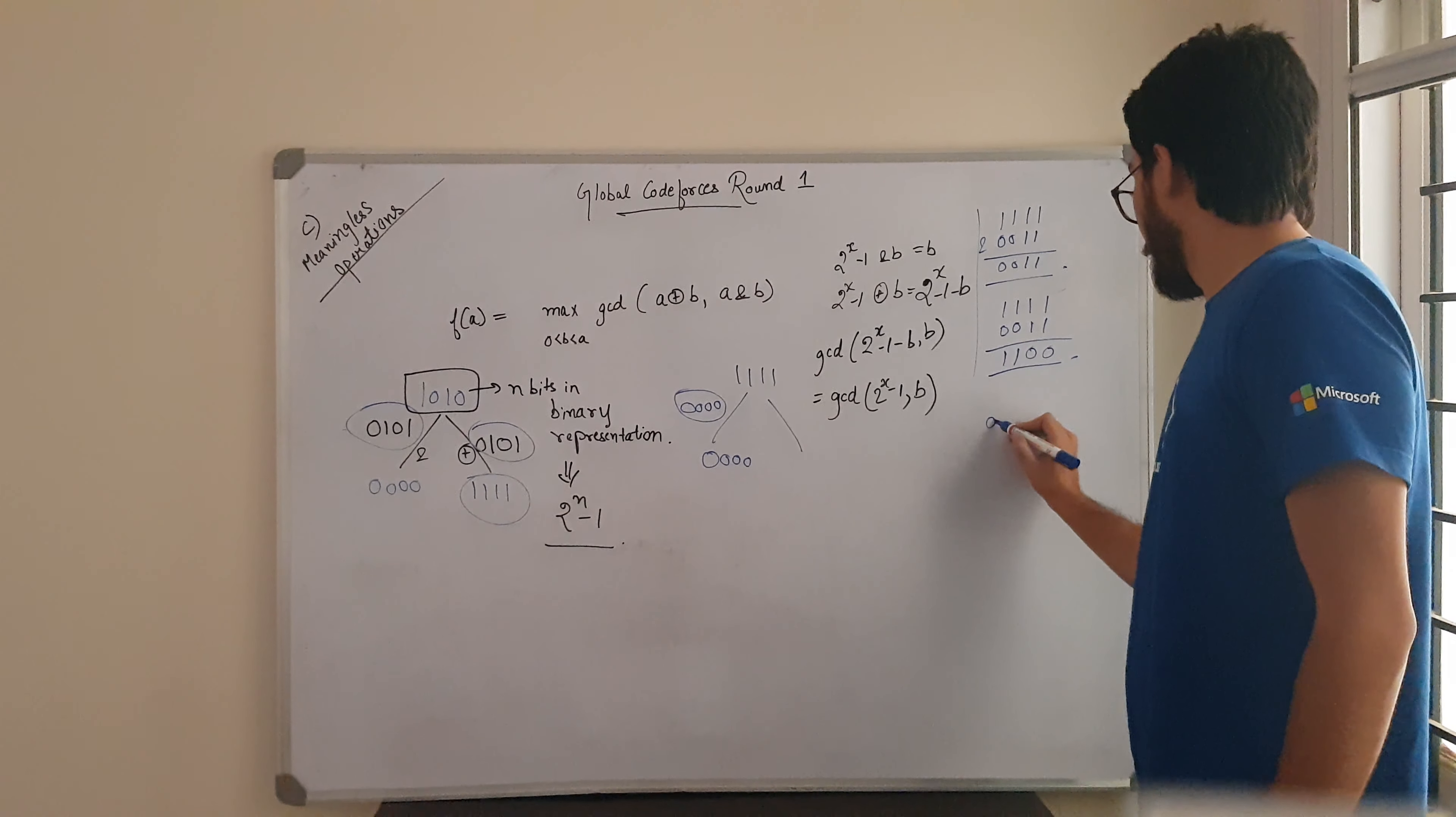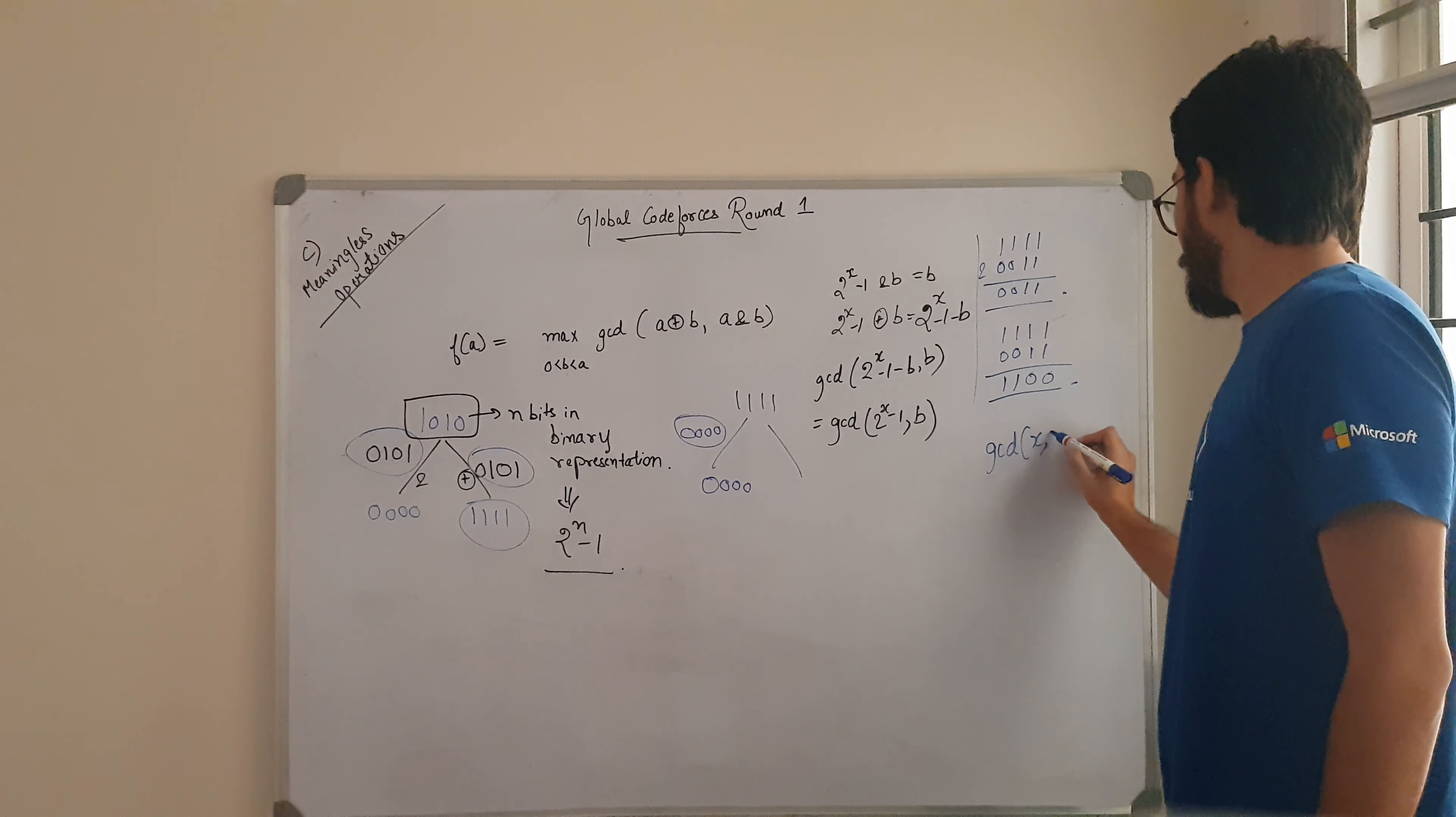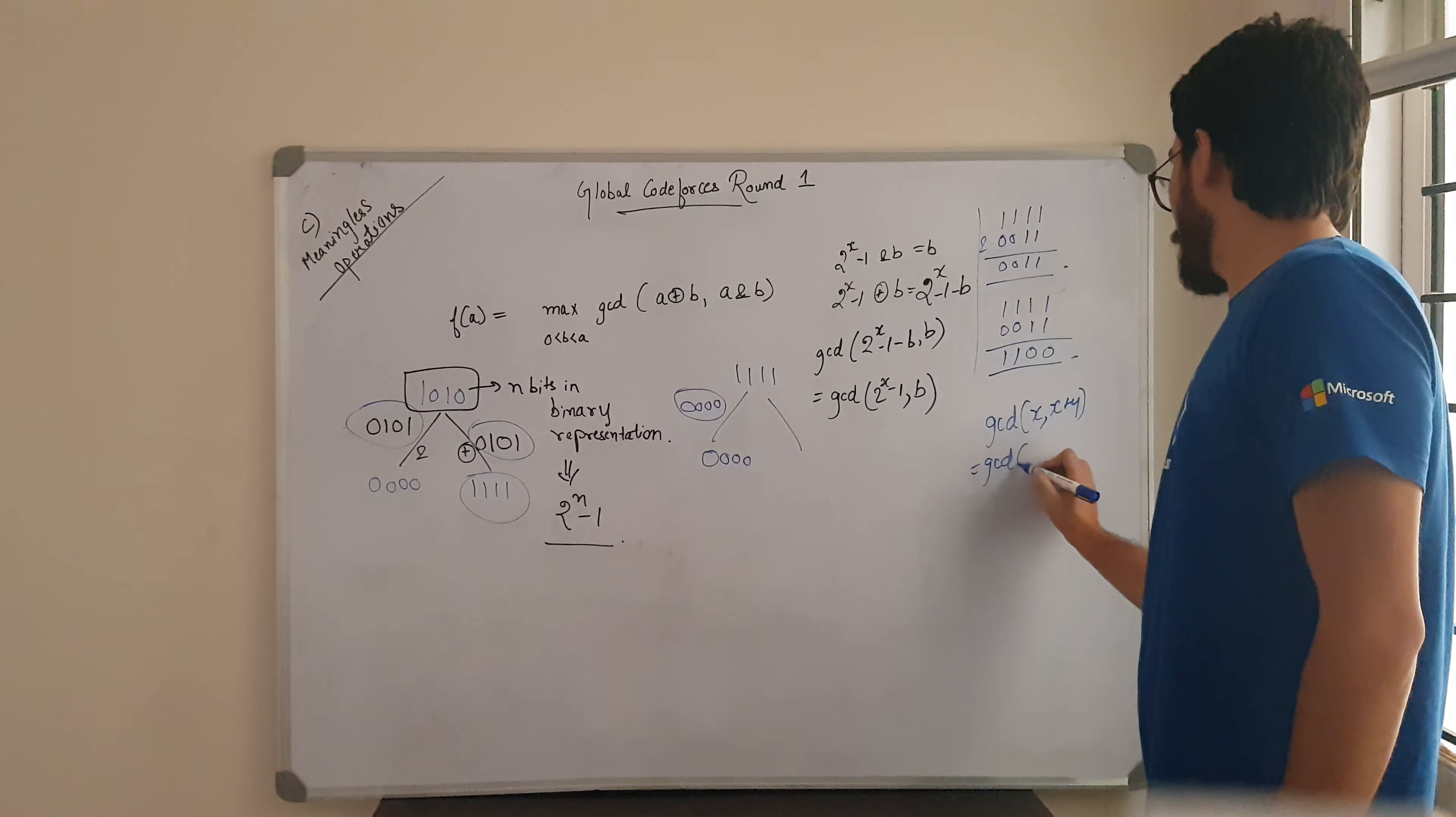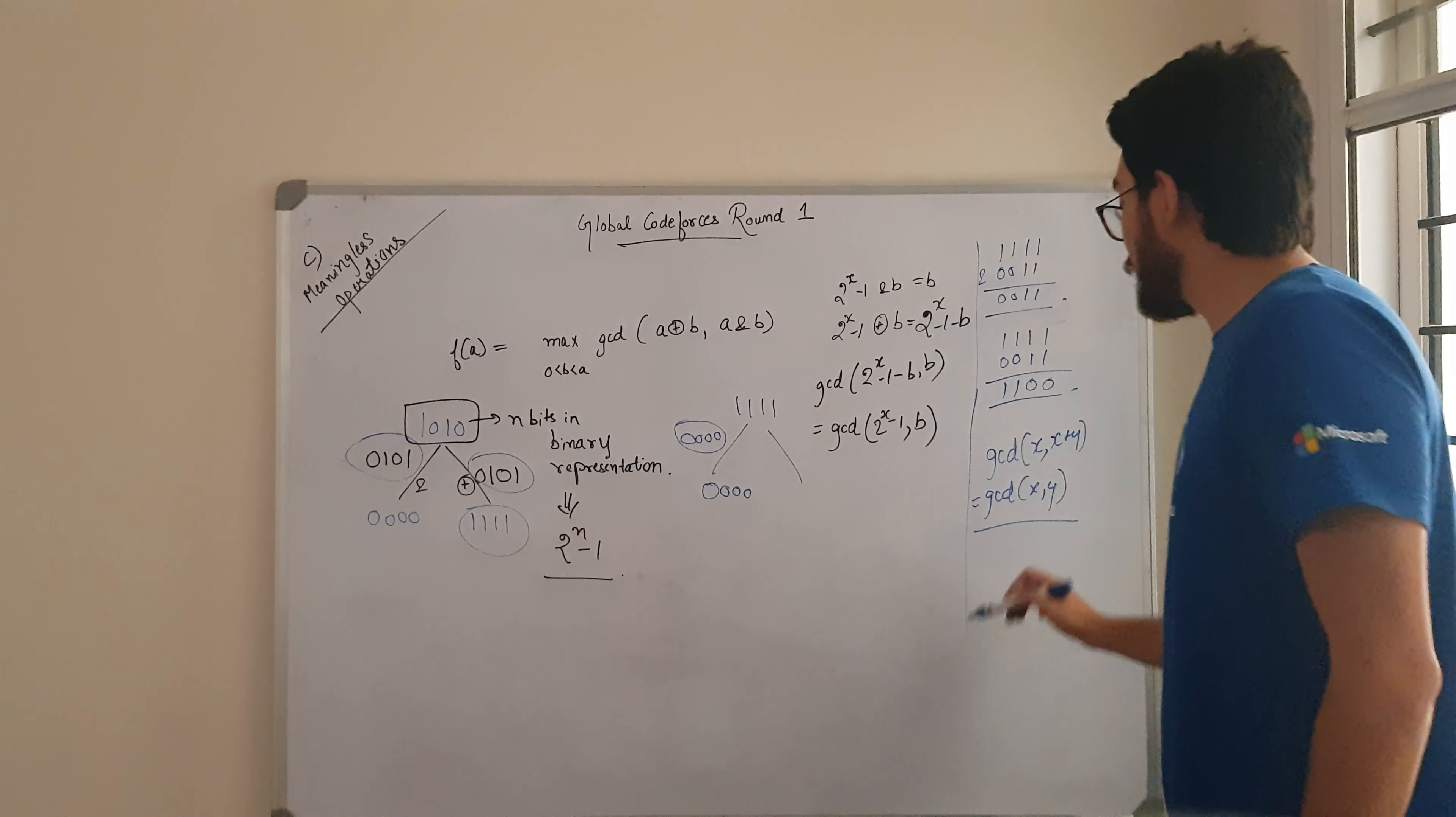How? We are using this property. GCD of X plus Y is equal to GCD of X comma Y. By using this property, we can write this.